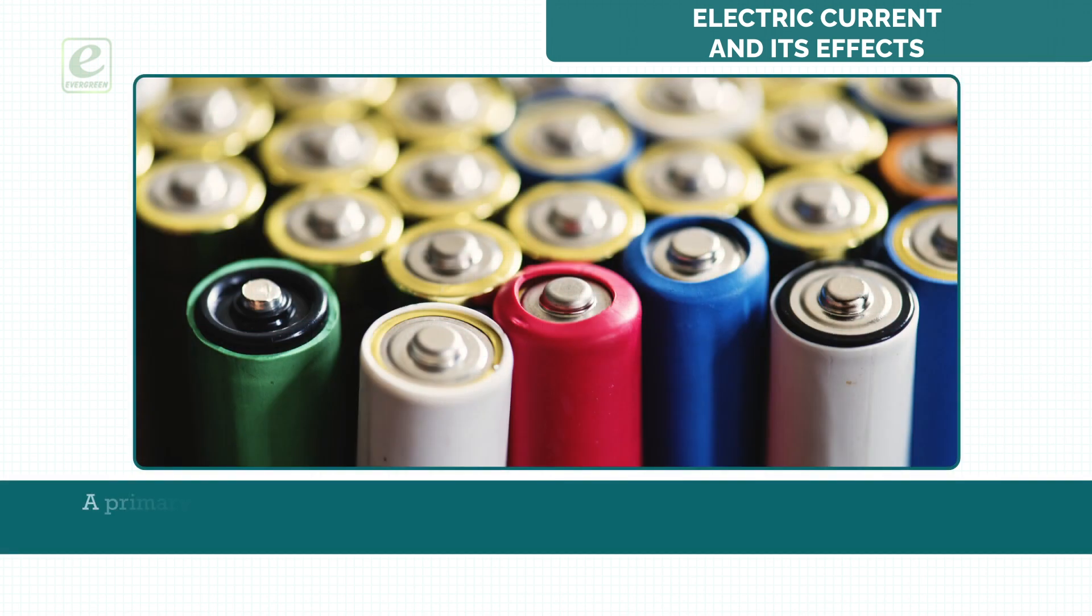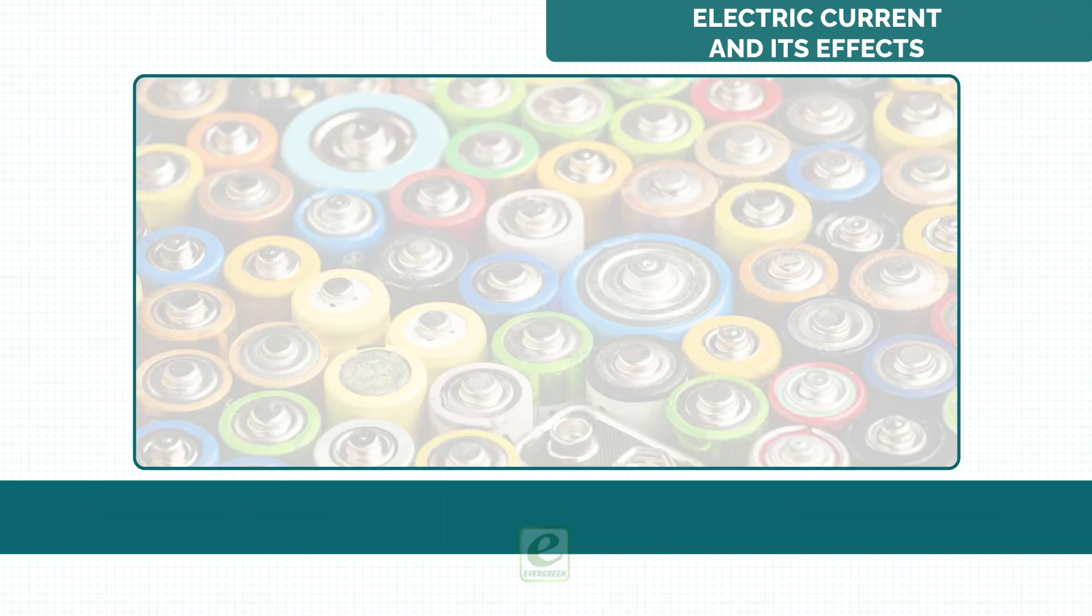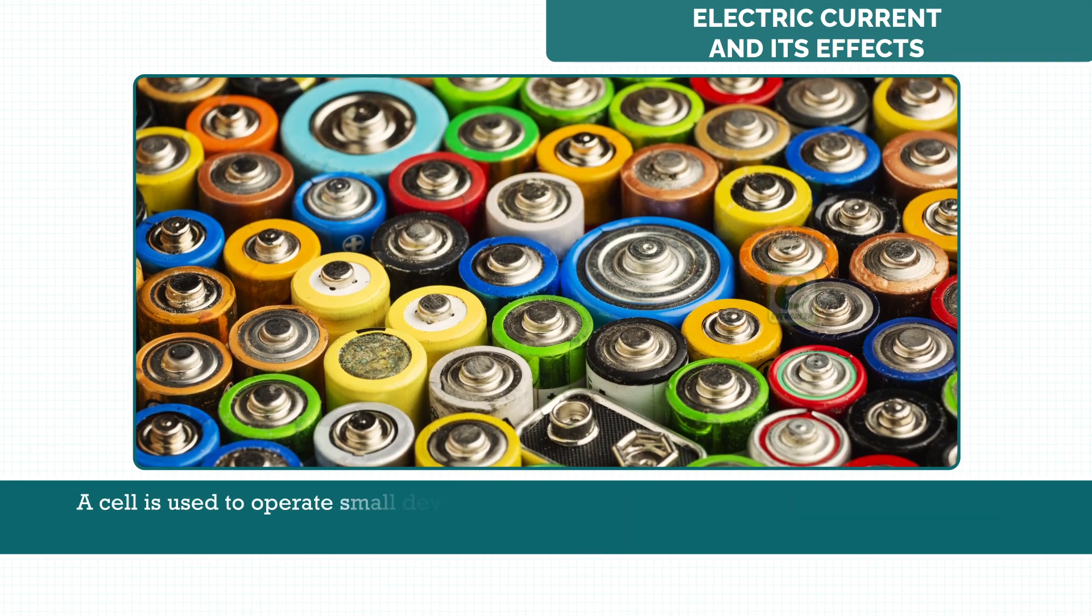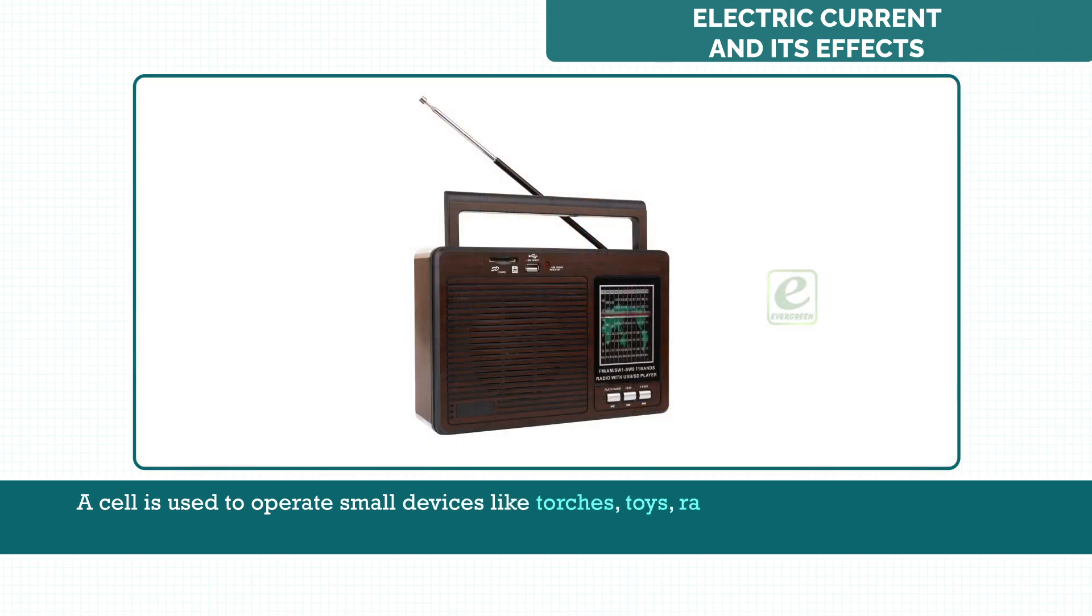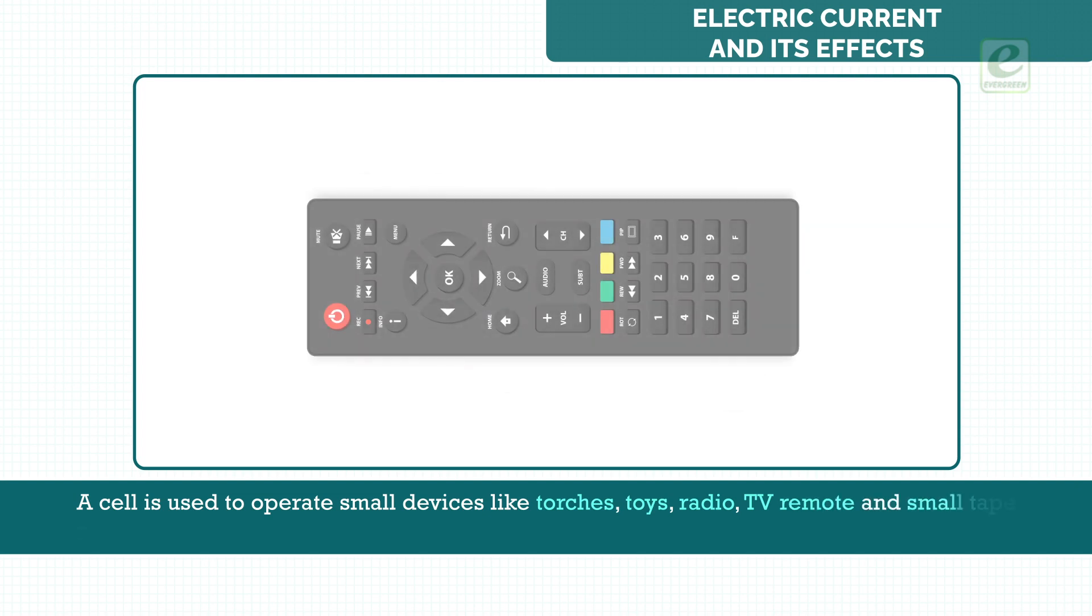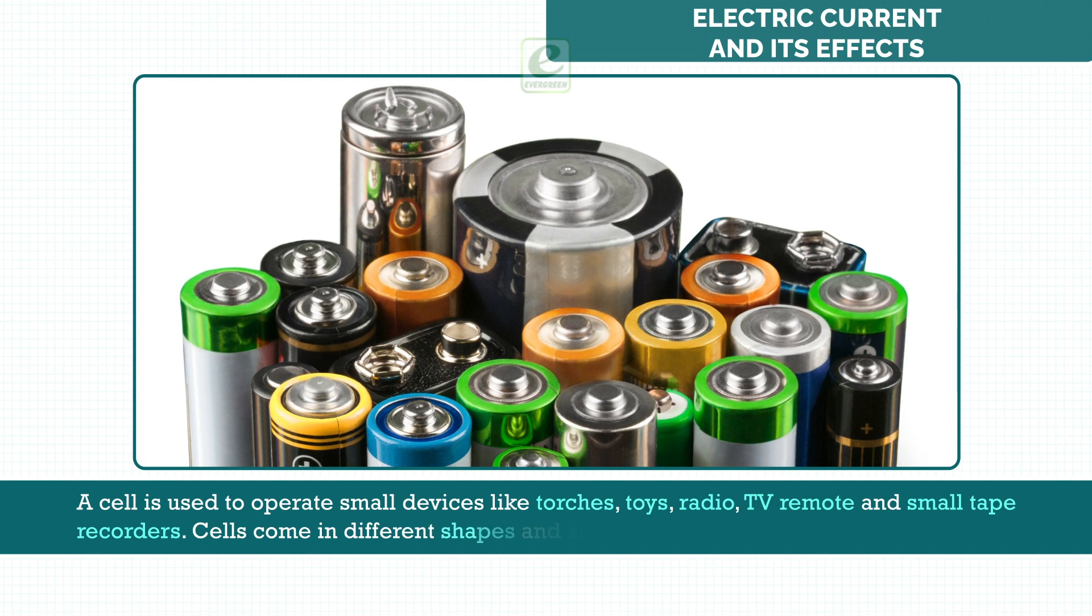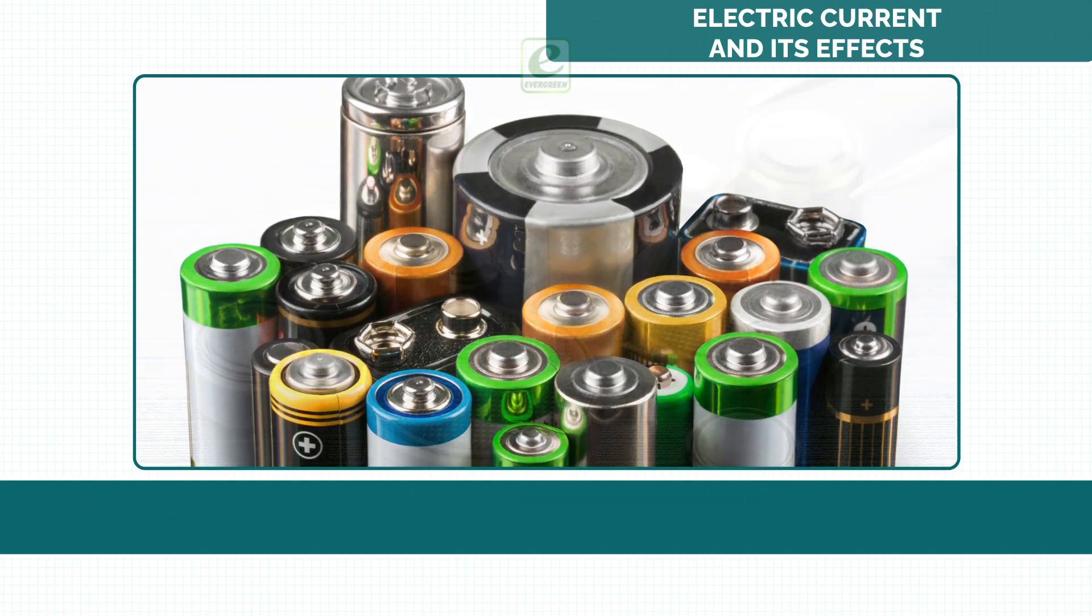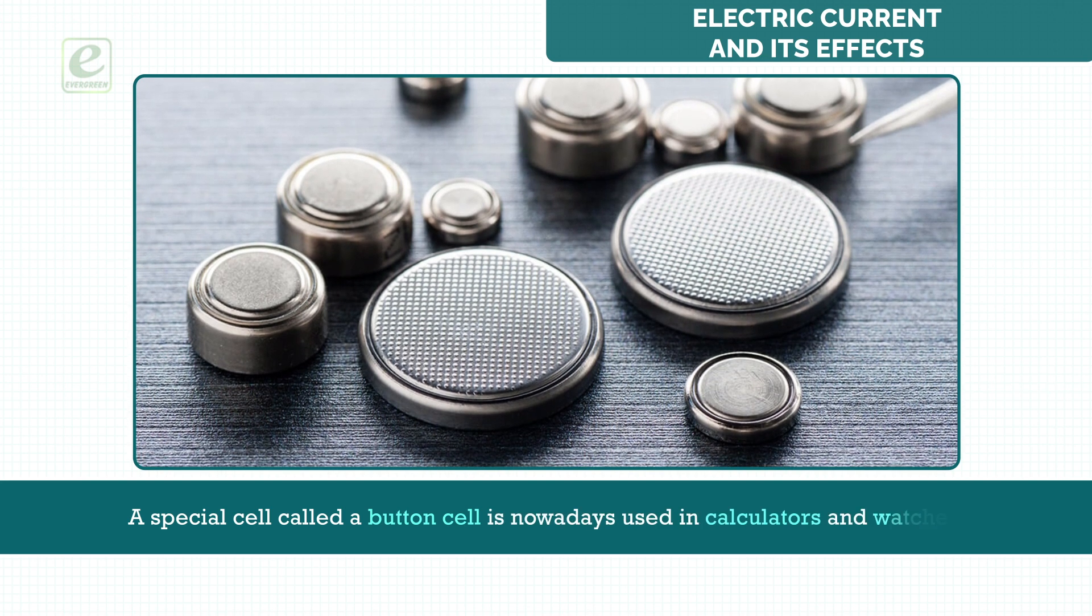A primary cell cannot be reused after one use, whereas a secondary cell can be used again and again by recharging, like a cell of a mobile phone. A cell is used to operate small devices like torches, toys, radio, TV remote and small tape recorders. Cells come in different shapes and sizes. A special cell called a button cell is nowadays used in calculators and watches.